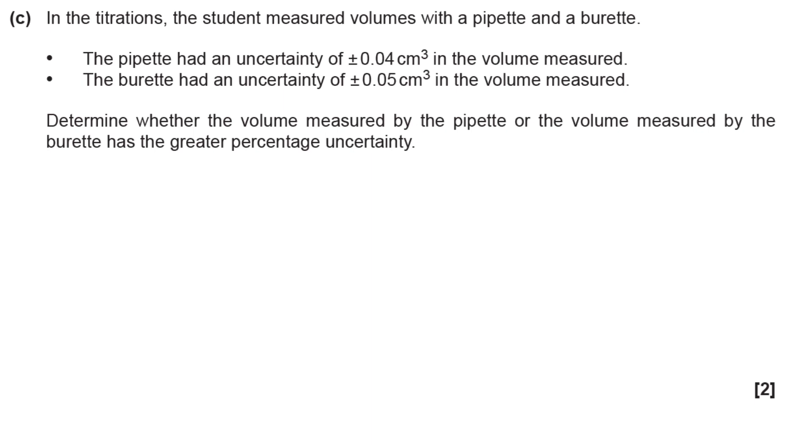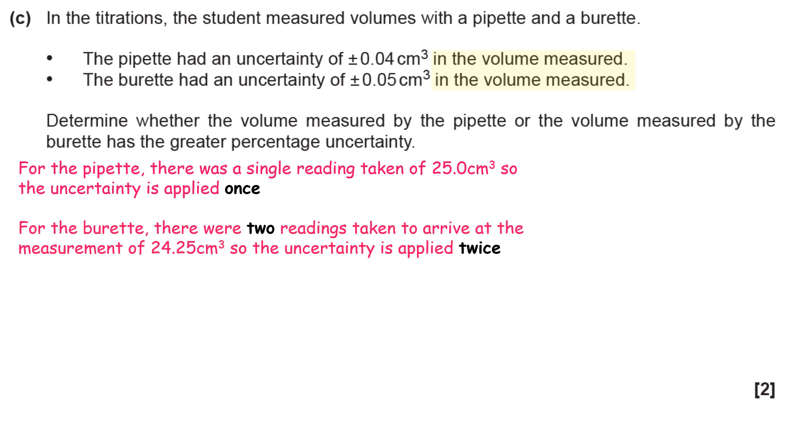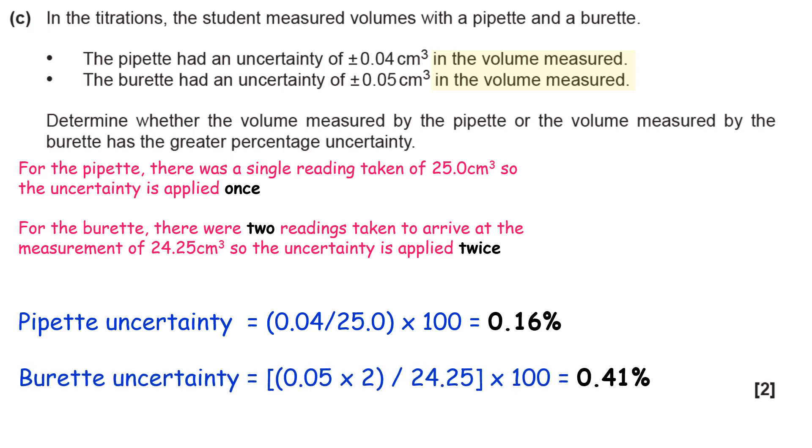The next part of the question looks at percentage uncertainty. We need to remind ourselves what the volumes measured are and how we obtain them. For the pipette, there was a single reading taken of 25 cm³, so you only need to apply the uncertainty once. But for the burette, there are two readings taken to arrive at the measurement of 24.25 cm³ - it was a measurement by difference, so the uncertainty provided is applied twice. The uncertainty is divided by the size of the measurement and then multiplied by 100. In the pipette's case, that's (0.04/25.0) × 100 = 0.16%. In the burette's case, that's (0.05 × 2/24.25) × 100 = 0.41%. Notice how I've multiplied 0.05 times 2 because I've applied the uncertainty twice.